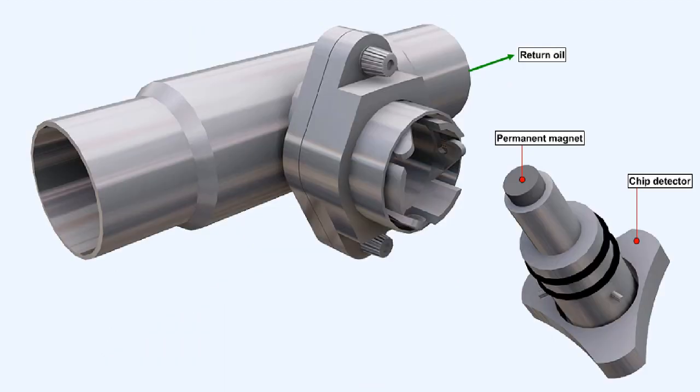Chip detectors, which are permanent magnet plugs, are situated in some of the scavenge lines to collect ferrous material from the oil as it returns to the scavenge pumps.